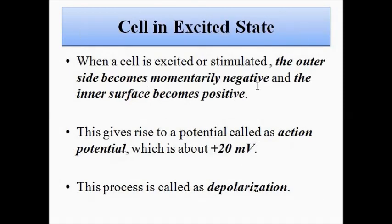Now, a cell in the excited state: when do we call a cell to be in the excited state? For example, when we walk, when we run, when we wave our hand, when we lift any body part — any simple activity associated with any part of the body causes the cells associated with that body part to get excited. When we walk, the cells in our legs get excited; when we lift something, the cells in our hands get excited; when we talk or move our jaws, the cells associated with our face get excited and stimulated.